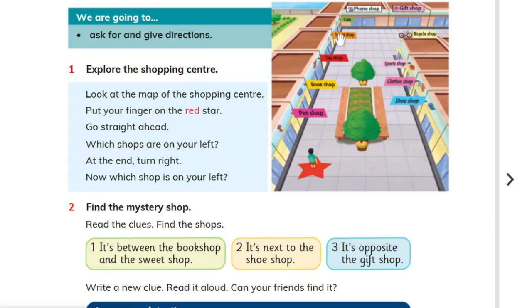Now we turn right. There is a cafe. Now we turn right again. Phone shop, gift shop, and the opposite of the gift shop is a bicycle shop.